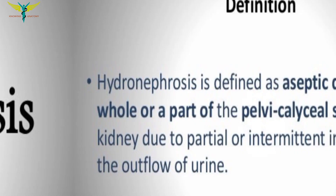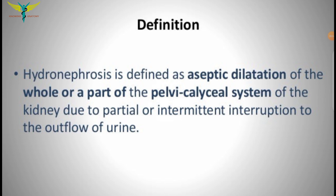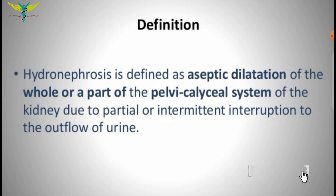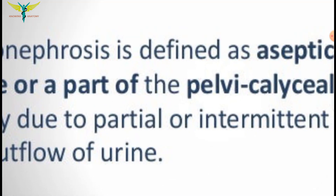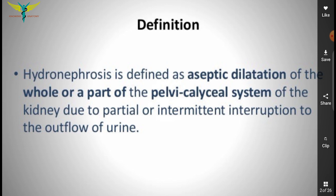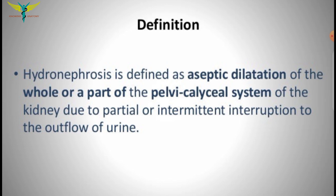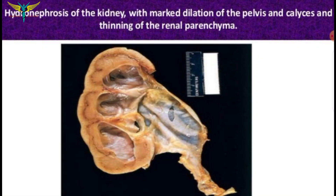Hydronephrosis is defined as aseptic dilatation of the whole or a part of the pelvic calyceal system of the kidney due to partial or intermittent interruption to the outflow of urine. As the name indicates, 'hydro' means water or fluid — it is the accumulation of fluid due to the interruption of the outflow of urine, mainly affecting the pelvis and the calyx.